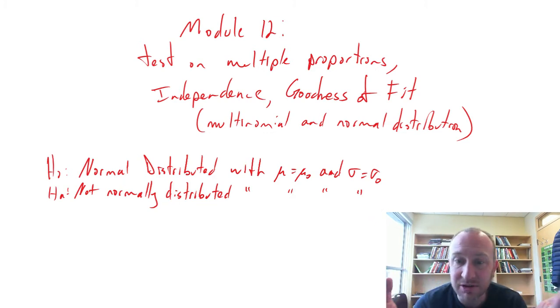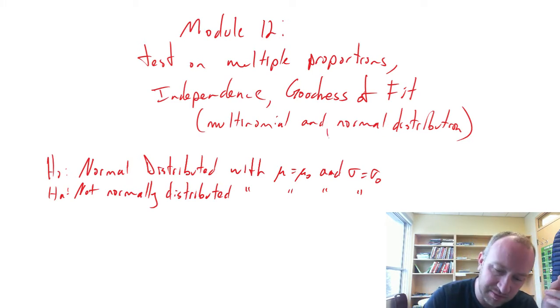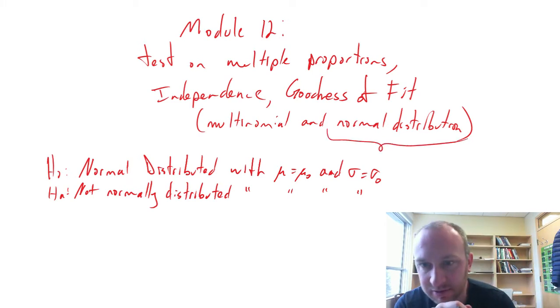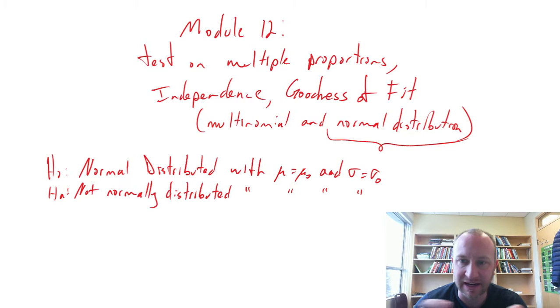So in this module 12, as you can see, we're doing a number of different types of tests. All of them are working with proportions. All of them are going to be chi-squared tests. This one, there will be some utilization of our z-tables, but for the most part, everything here is going to be various types of chi-squared tests that we'll be looking at.